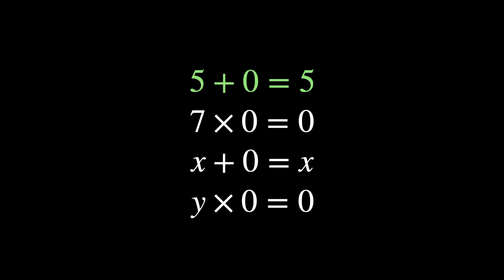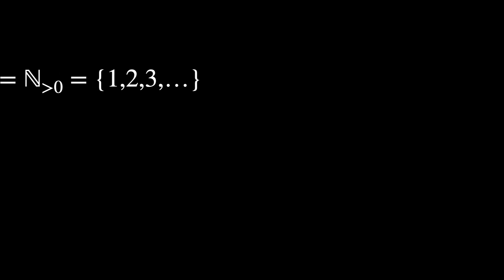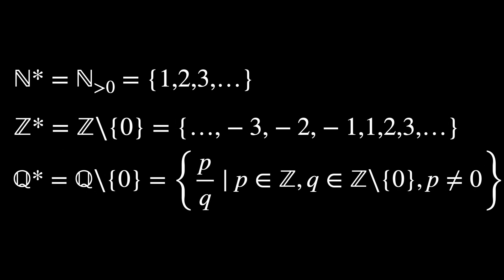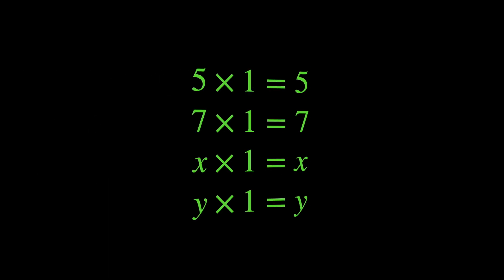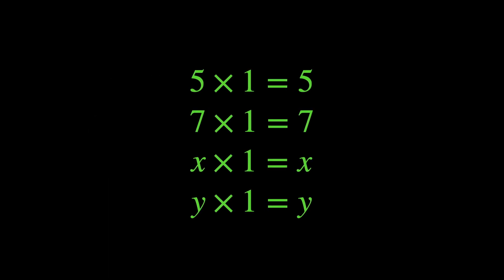The process of solving this equation uses properties of the real numbers, which do form a group under addition. But none of these form a group under multiplication — for that, every element needs to have a multiplicative inverse. Zero does not have an inverse, so none of these sets can form a group under multiplication as long as zero is included. If you exclude zero, the rational, real, and complex numbers can form groups under multiplication. So the identity element for multiplication is 1.